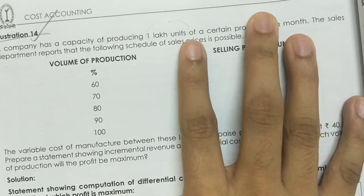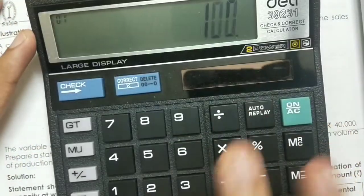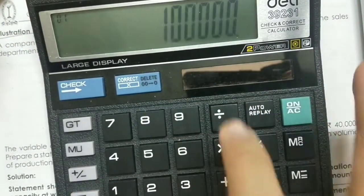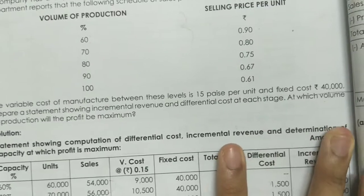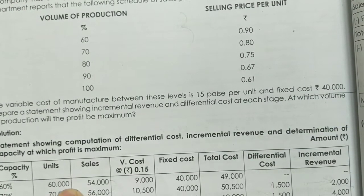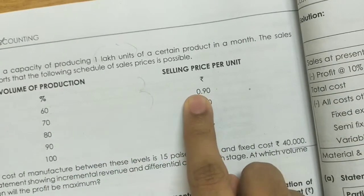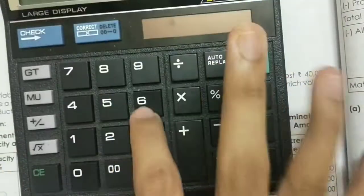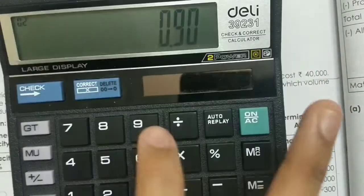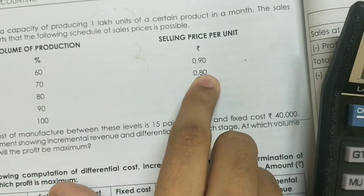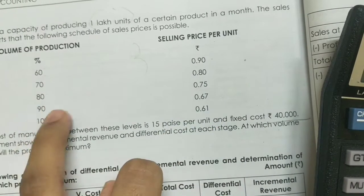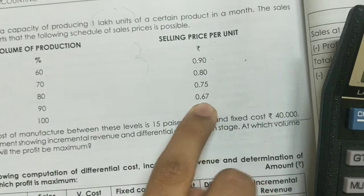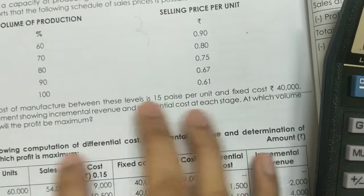At 60% capacity, 1 lakh into 60% we get 60,000 units at a price of 0.90. At 70% capacity, 1 lakh into 70% we get 70,000 units at 0.80. At 80,000 units we get 0.75, at 90,000 units we get 0.67, and at 1,00,000 units we get 0.61. So we will get the sales amount series.